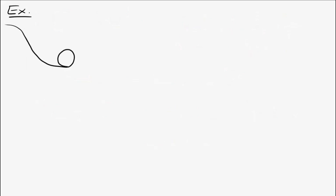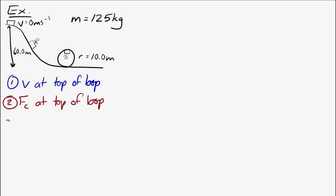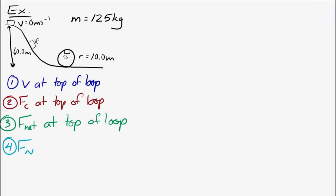Let's look at a specific example — a roller coaster. It has a big hill at the beginning, goes down to the ground, and through a circular loop. The initial hill is 60 meters high, starting from rest. The loop has a radius of 10 meters, and the mass of the roller coaster car is 125 kilograms. We'll find the speed at the top of the loop, the centripetal acceleration, the net force, and the normal force.